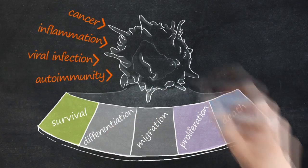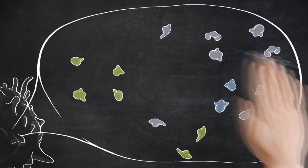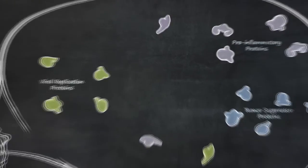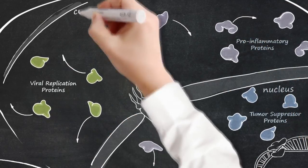The fate of the cell is often controlled by the localization of proteins. They affect the cell differently depending on their location, for instance in the nucleus or in the cytoplasm.